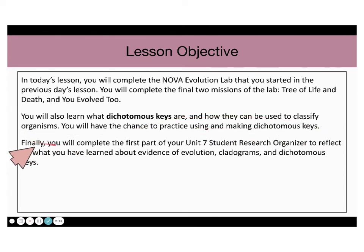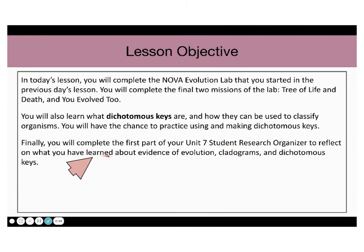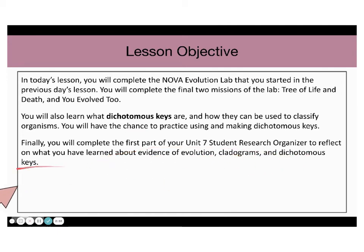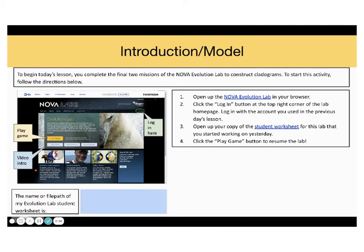Finally, you will complete the first part of the Unit 7 Student Research Organizer to reflect on what you have learned about evidence of evolution, cladograms, and dichotomous keys. Let's begin with the lab.